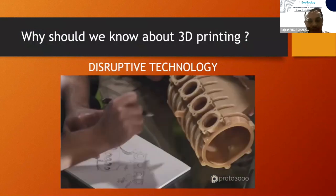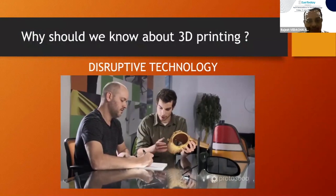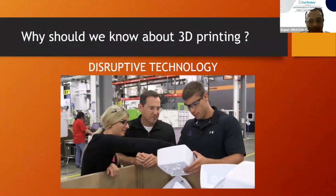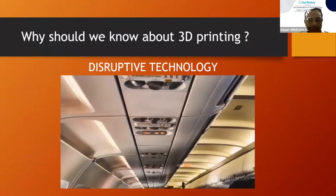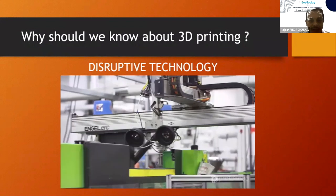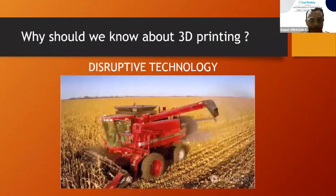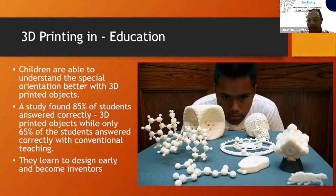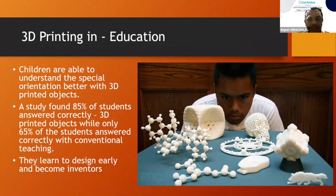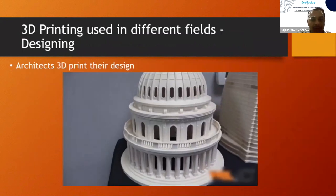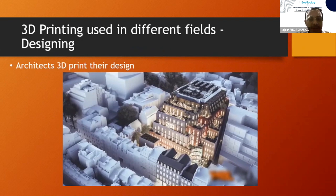It's a disruptive technology which has changed a lot of industries around us — right from automobile to aircraft industries. Even in medicine and agriculture it is changing our lives. In education, spatial orientation is better understood with 3D printing structures; 85% of students were able to answer compared to 65% on conventional teaching. In architecture, most designs are 3D printed nowadays.